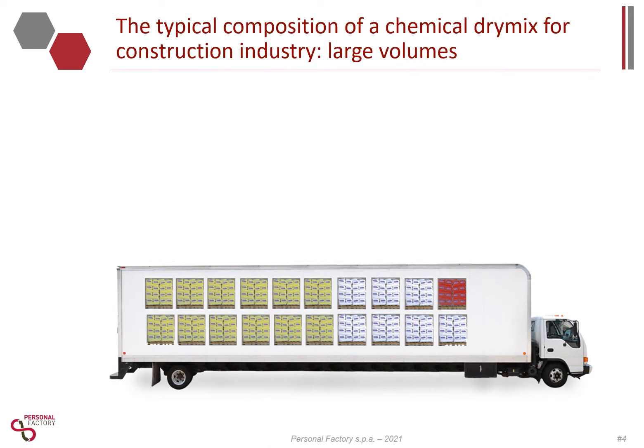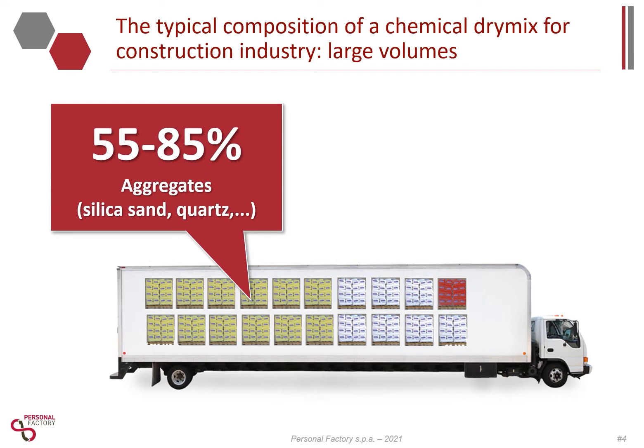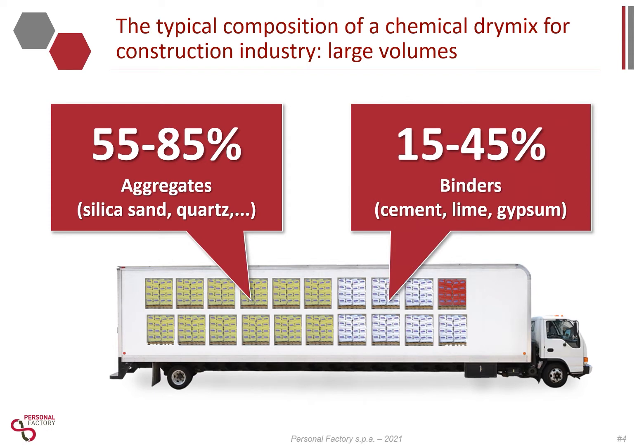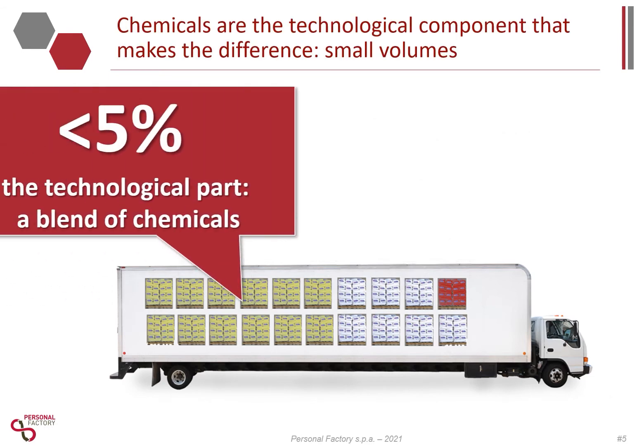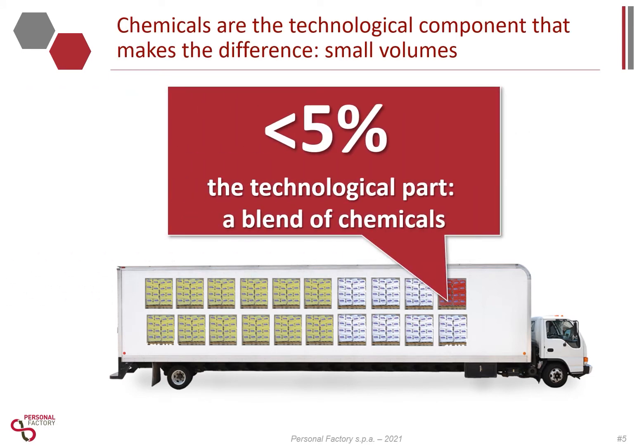The typical composition of a construction chemical dry mix is up to 90 percent aggregate — like silica sand, calcium carbonate, etc. — and up to 30 percent binder, like cement, gypsum, or lime. Cement is the most common. We are talking about simple commodities: cheap raw materials found in every country locally, within an average radius of 100 kilometers. Less than 5 percent of the formulations are chemicals — the technological component that transforms sand and cement into construction chemical materials like tile adhesive, plaster, and more.